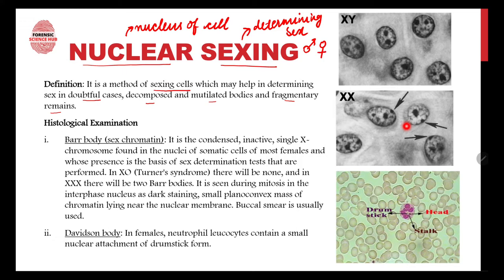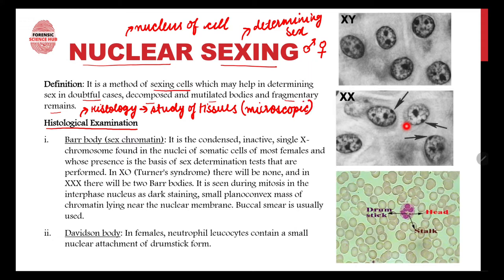For nuclear sexing, we perform a histological examination. Histology is the microscopic study of cells and tissues. So in nuclear sexing, we examine cells under a microscope, and in that examination we look for certain things — specifically Bar body and Davidson body.